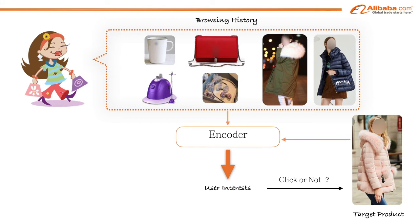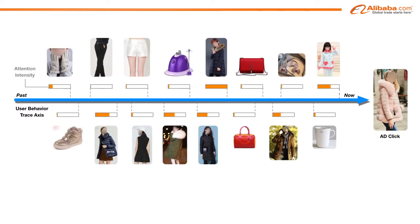By introducing a local activation unit, Deep Interest Network pays attention to related user interests by softly searching for relevant parts of historical behaviors and takes a weighted sum to obtain the representation of user interests with respect to the candidate ad. Behaviors with higher relevance to the candidate ad get higher activation weight and dominate the representation of user interests. We visualize this phenomenon in this slide. In this way, the representation vector of user interests varies over different ads, which improves the expressive ability of the model under limited dimensions and enables Deep Interest Network to better capture users' diverse interests.